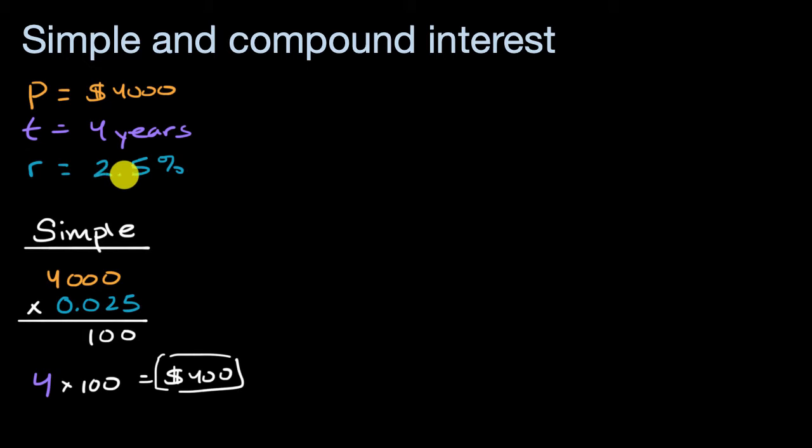then over four years, it's just four times 2.5%. I'm going to get 10% of the original $4,000, which once again is $400.